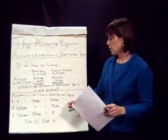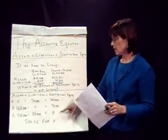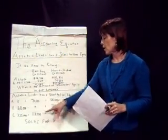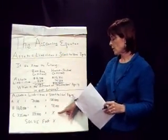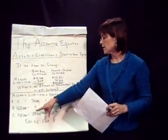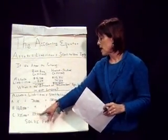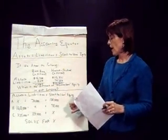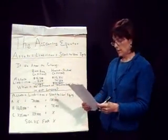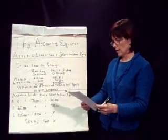And in the last one, if we know what our assets are and we know what our liabilities are but we don't know our stockholders' equity, we're going to take assets minus liabilities to get our stockholders' equity.